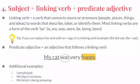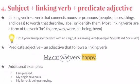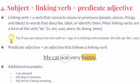Take a look at the example: 'My cat was very happy.' Here, the subject is underlined, the linking verb 'was' is circled, and the predicate adjective 'happy' is highlighted. Practice identifying the complete subject, linking verb, and predicate adjective in the additional examples at the bottom of the slide.